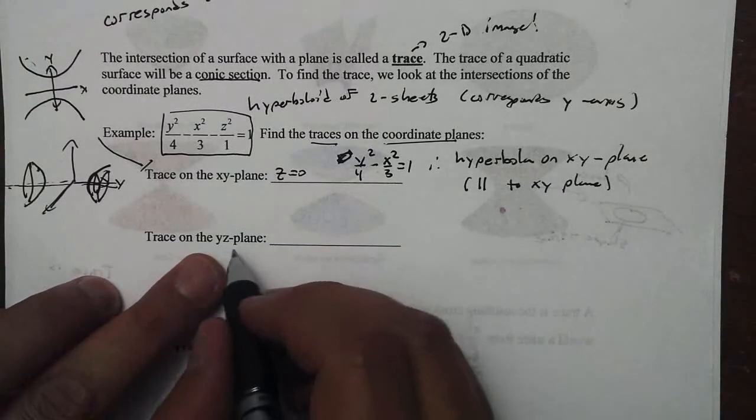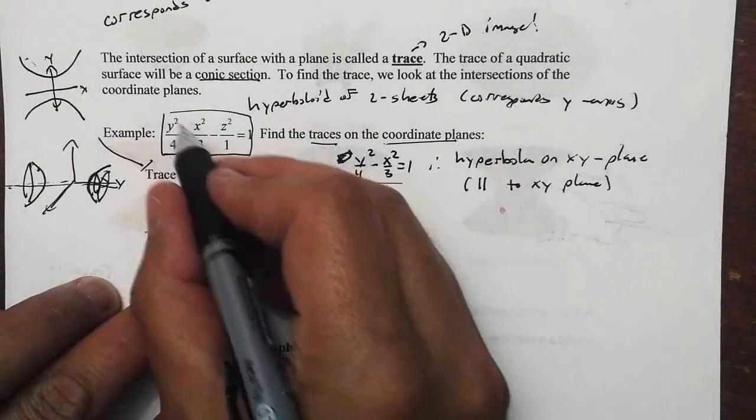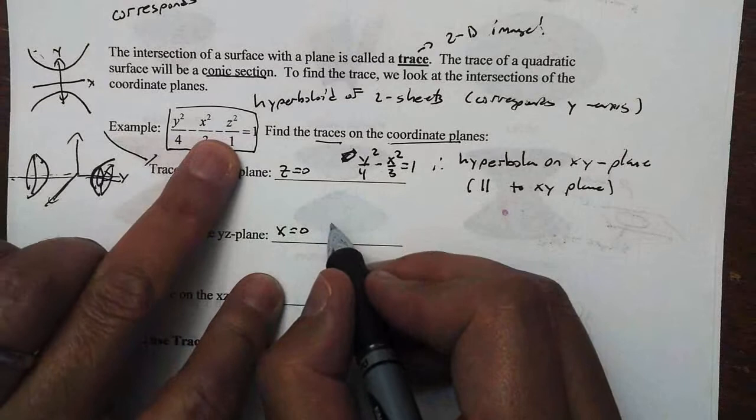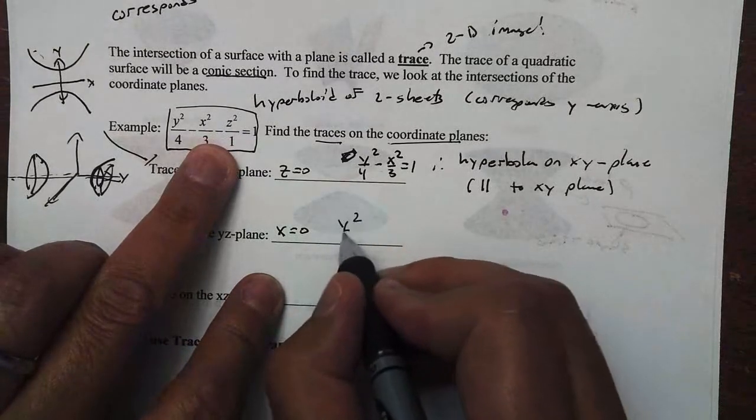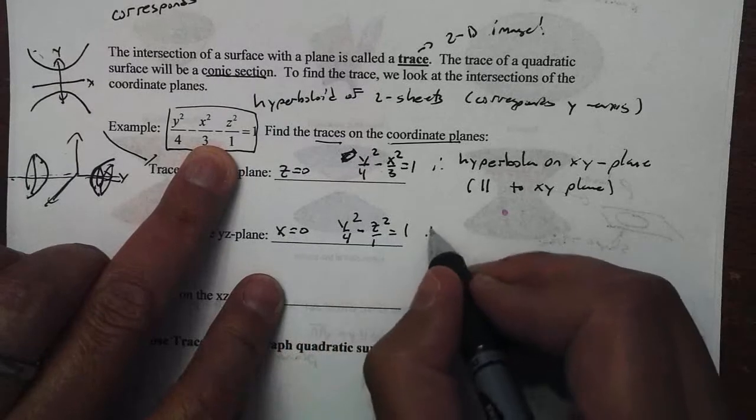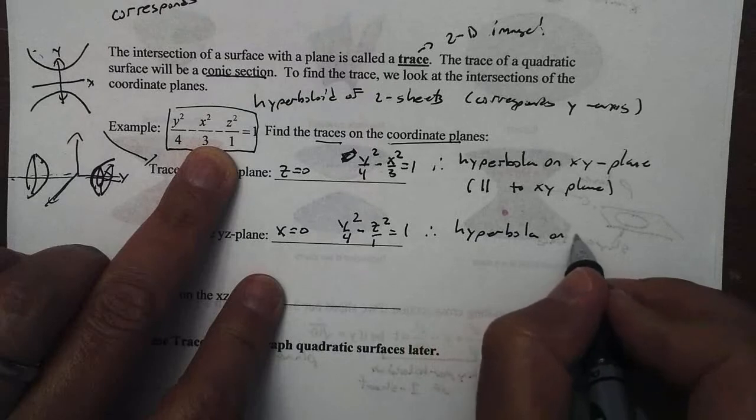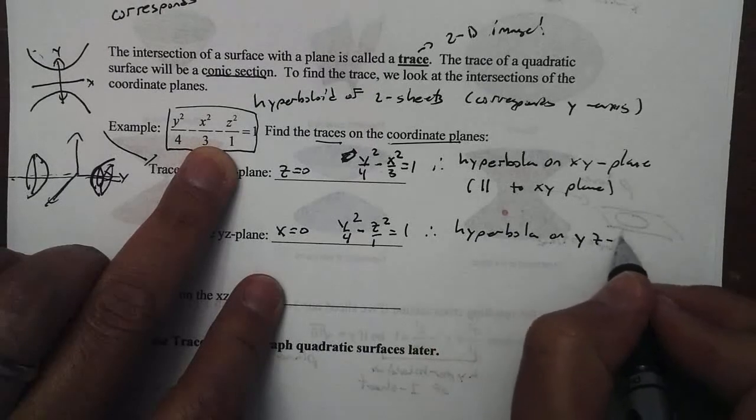To find the yz plane, to trace the yz plane here, we're going to let x be 0. So let's let x be 0 now. If we let x be 0, we would get y squared over 4 minus z squared over 1 equal to 1. Again, this is a hyperbola on the yz plane.